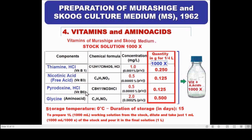Regarding amino acids, these are considered an organic source of nitrogen in addition to the inorganic source. For example, glycine, the simplest amino acid, is a common constituent of plant tissue culture media. For vitamins and amino acids, we prepare a 1000X stock solution of 250 milliliters. That means multiplying 0.001 gram per liter by 1000, giving 1 gram per liter or 0.25 gram per 250 milliliters. Store this stock at 0 degrees Celsius for about 15 days.